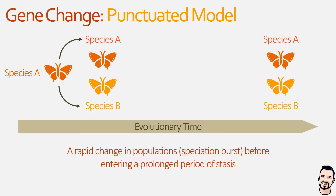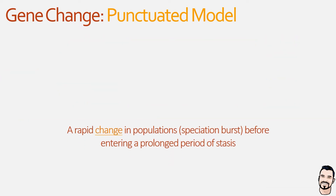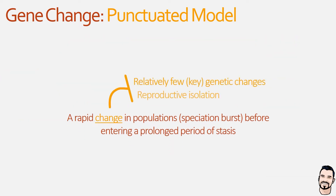The interesting thing about this model is that it challenges the traditional view that species evolve through a slow and steady accumulation of genetic changes. Instead, this change is the result of key genetic changes such as single nucleotide substitutions or single event errors that lead to catastrophic reproductive isolation that immediately separates a subpopulation from the main population.